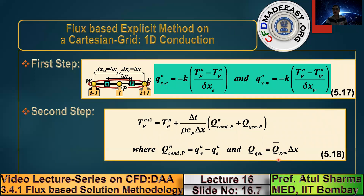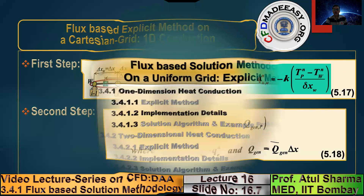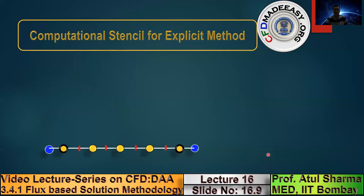This slide presents an animated representation of the formula for the explicit method. In the first step, we calculate qx at green squares by picking up data from two adjacent grid points. The loop for qx runs from 1 to 6 — there are six green squares. For example, qx_3 is calculated as (T_4 - T_3) divided by delta x. In a uniform grid, the distance between yellow circles equals the width of the control volume, which is delta x.